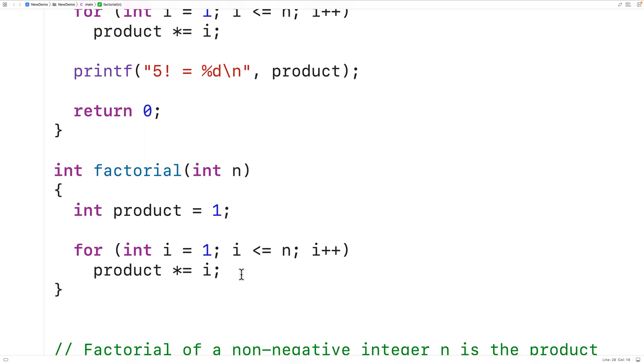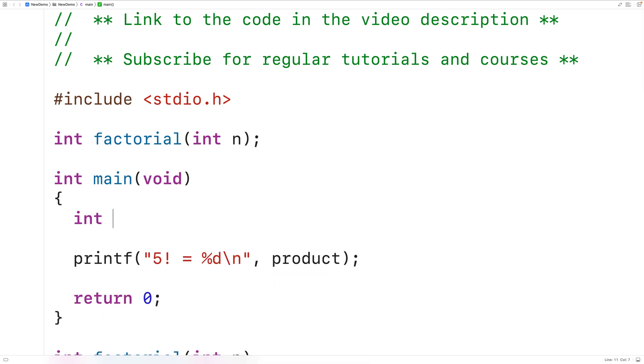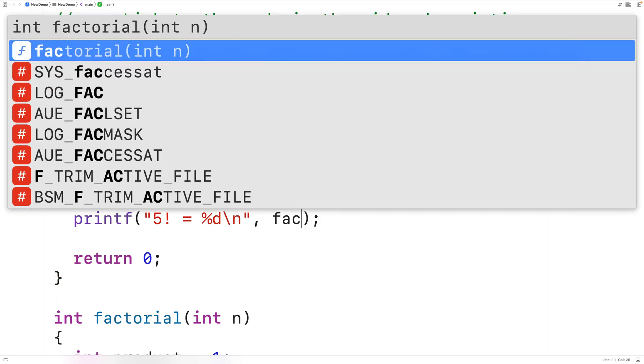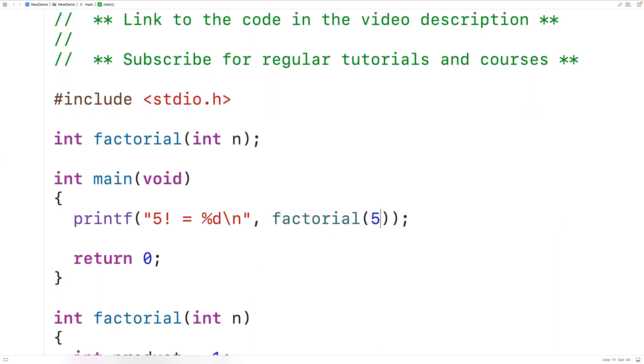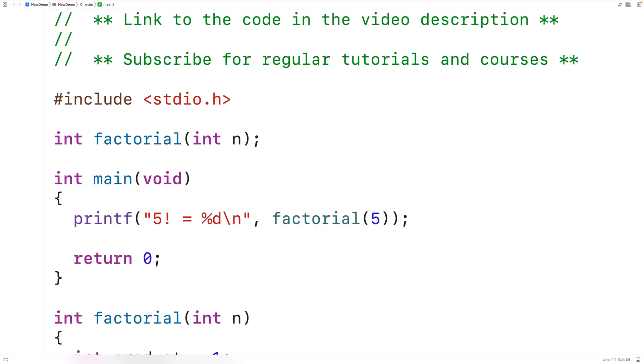Now, once we've calculated the factorial, we're going to return that calculated value. We're going to return product. We can now call the function in our main function. So in our main function here, we could have printf and call the function with 5. So we'll have factorial with 5 as an argument. We can save our program, compile it, and run it, and we get that the factorial of 5 is 120. So the program is still working. We're just now using a function to calculate the factorial of a number.